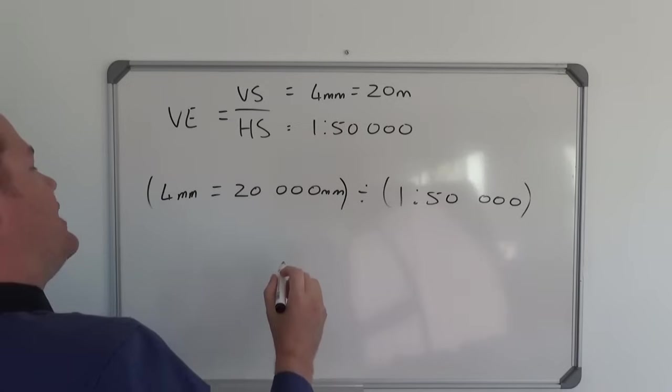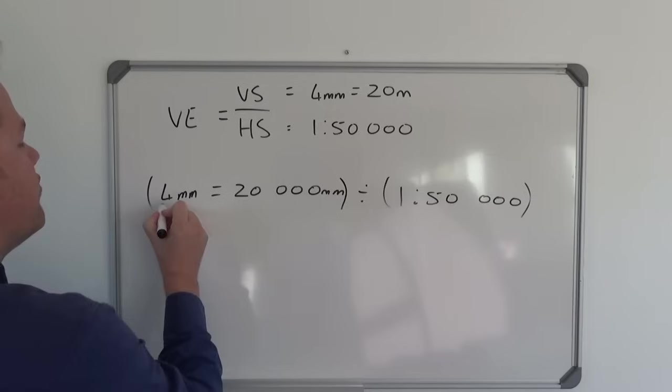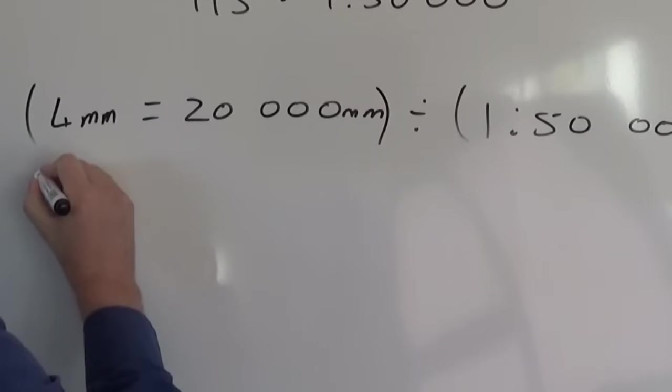And now what we need to do next is we need to simplify what we see here. So we are going to divide by 4 here and divide by 4 on this side. And what we'll have is the following.